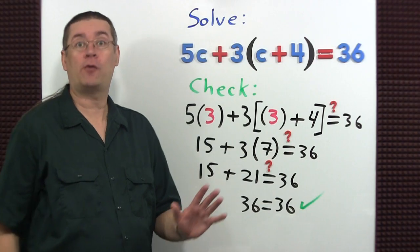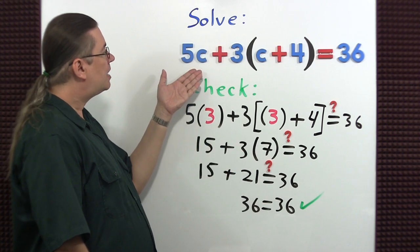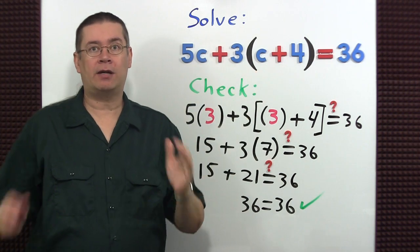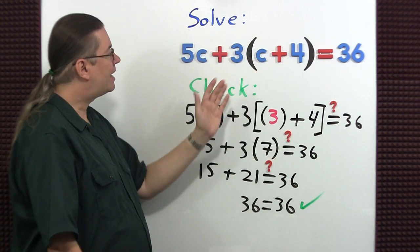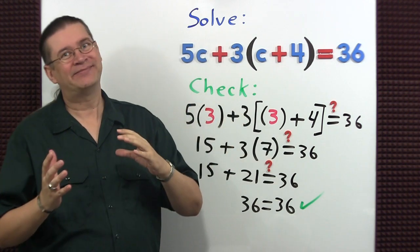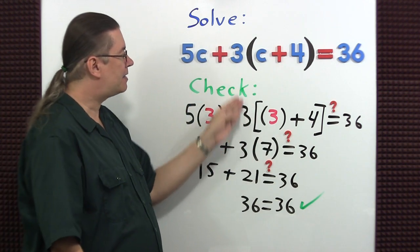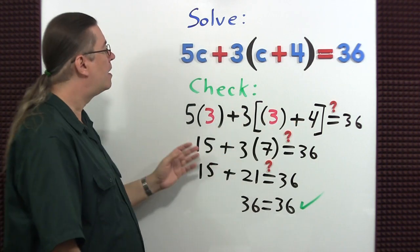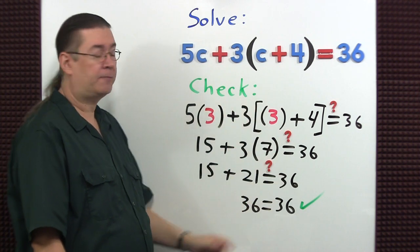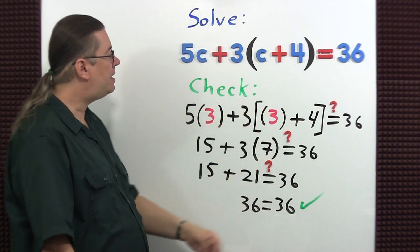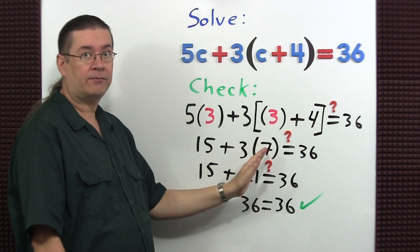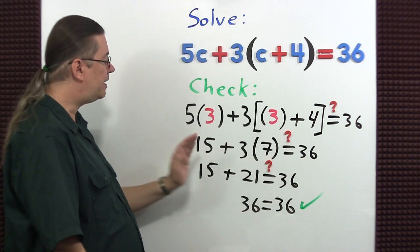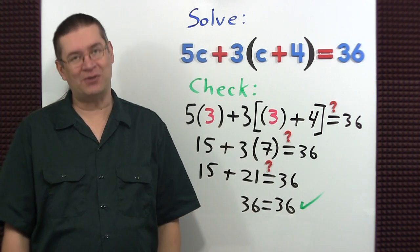I would like to point out a few things for this check. The first step of course is to rewrite our equation and in place of the variables, we're supposed to write down a small set of parentheses. However, when you do that, in this case, you get parentheses within parentheses. So it's best to rewrite the outer parentheses as a set of square brackets like this. If you use parentheses within parentheses, that's fine too. Then we need to follow our order of operations. I multiplied the 5 times 3 to get 15, and I added the 3 plus 4 to get 7. Continuing our order of operations, 3 times 7 is 21, and then add that with the 15 to get 36 is equal to 36. It checks.